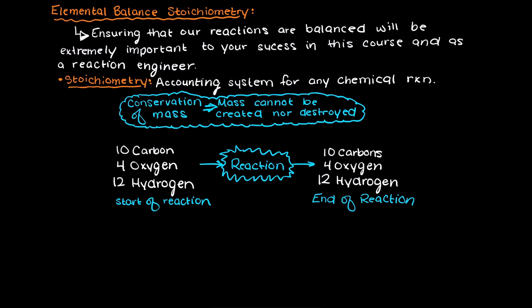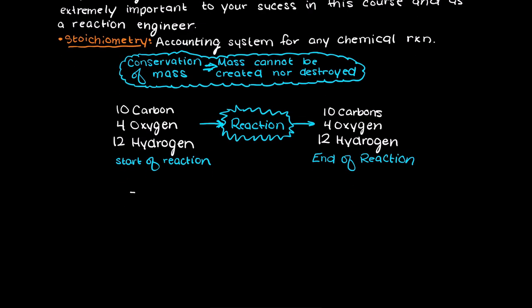And this is what an elemental balance is. So to ensure that our atoms into a reaction equals the same number of atoms out of a reaction for each species in the reaction we do the following.